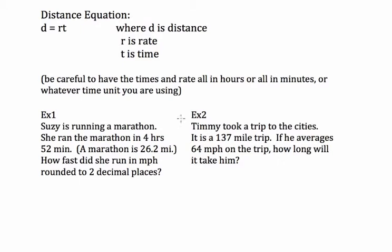The distance equation is distance equals rate times time, where d is distance, r is rate, and t is time. Be careful when you use this equation to have all your times and rates either in all hours or all minutes or whatever time unit you're using.